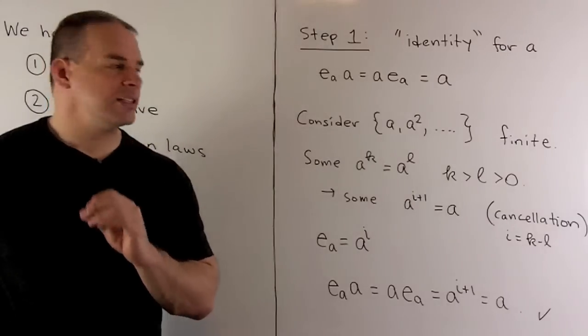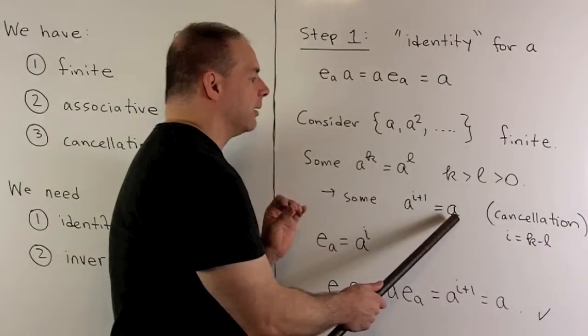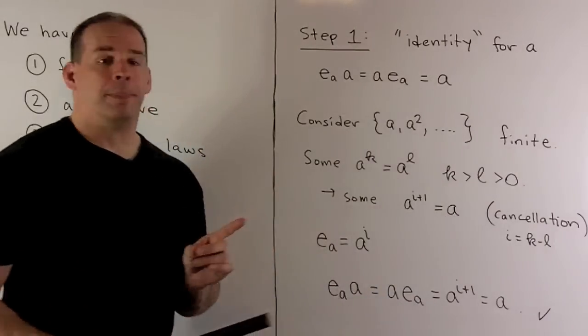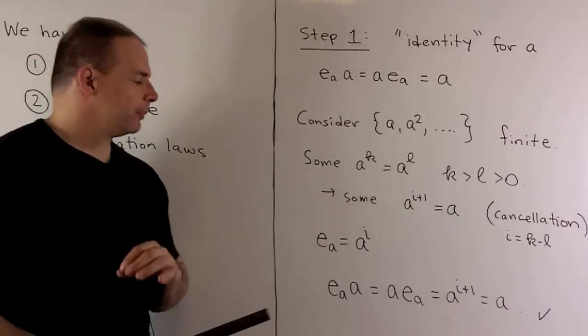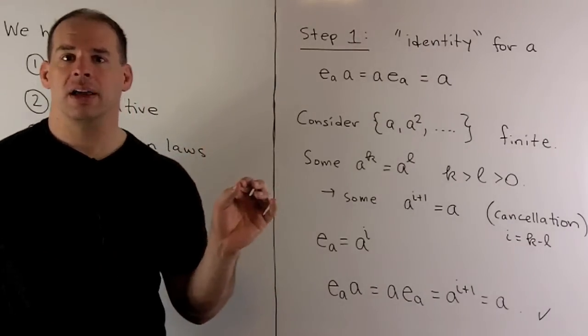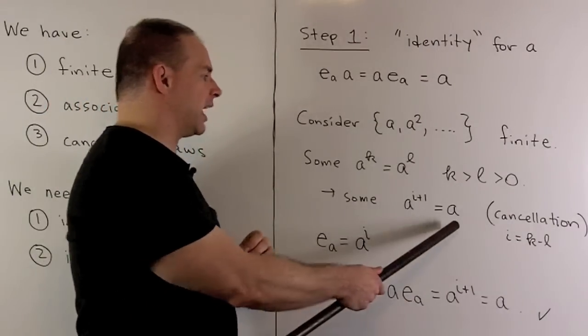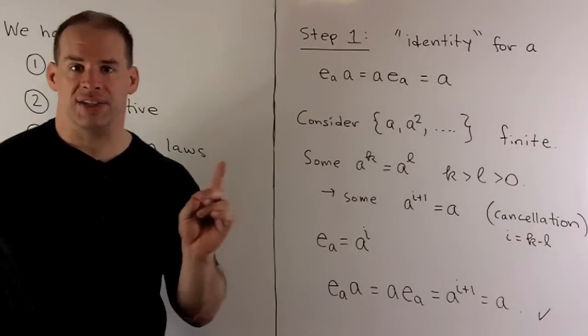So, we're going to do that until I have some A to the I plus one is equal to A. Now, we'll call E sub A equal to A to the I and then you'll note we multiply by A on either side, we just get A to the I plus one and then by assumption that's going to be equal to A. So, that gives me my identity element for A itself.